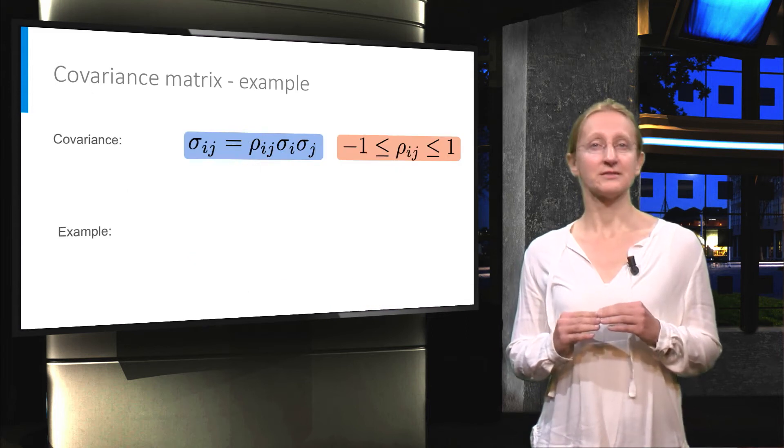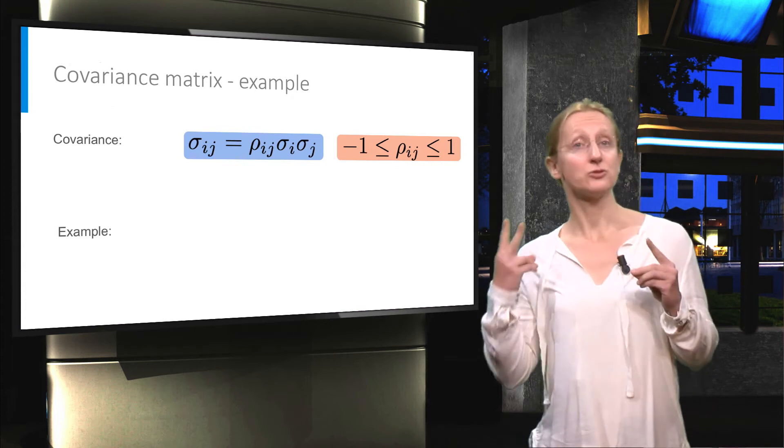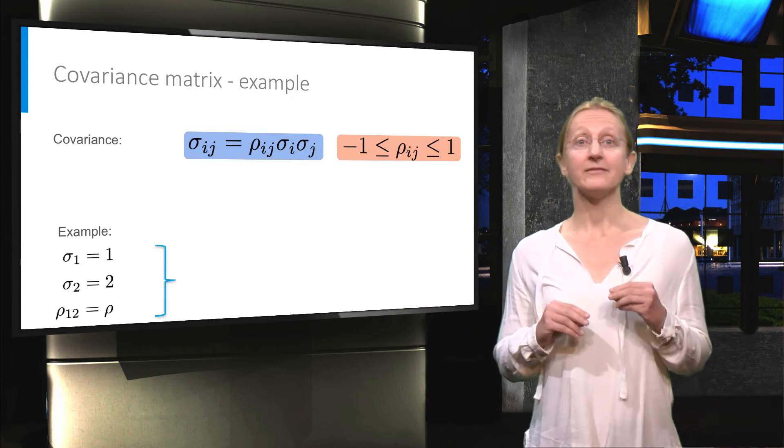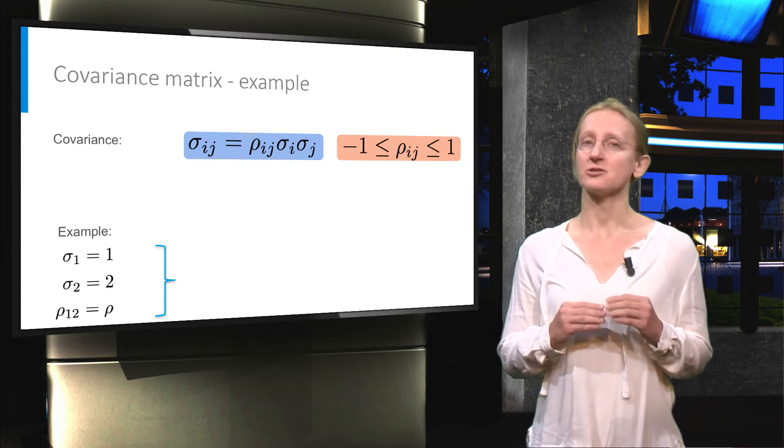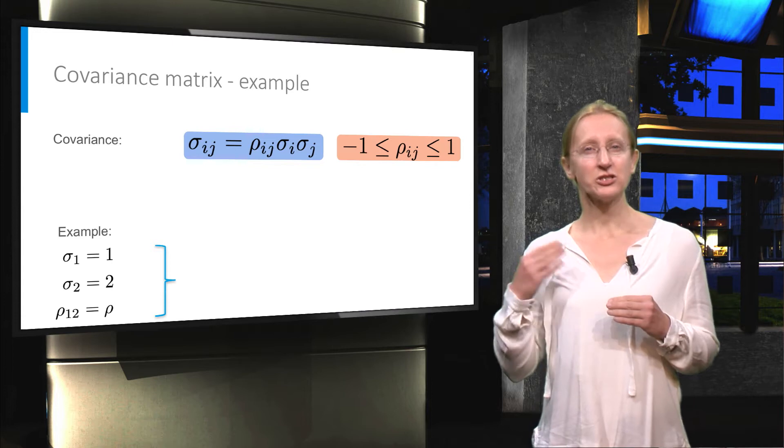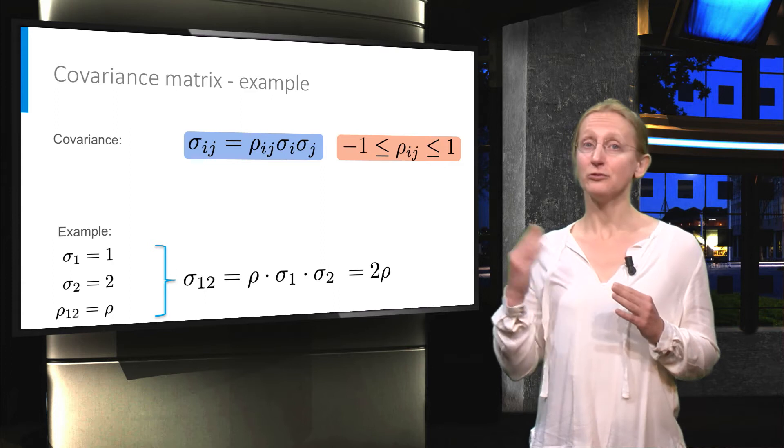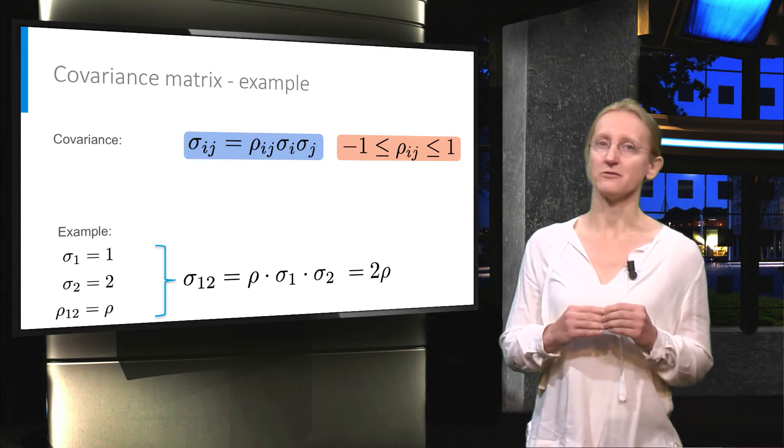Let's assume that the standard deviation of two random variables are one and two respectively, and the correlation coefficient is said to be equal to rho. Then, from the definition we know that the covariance is equal to two times the correlation coefficient.